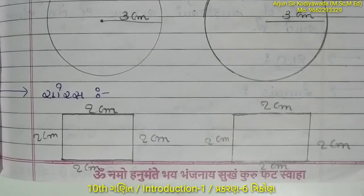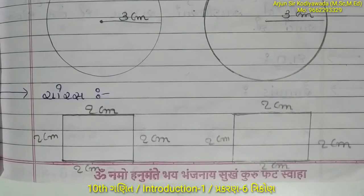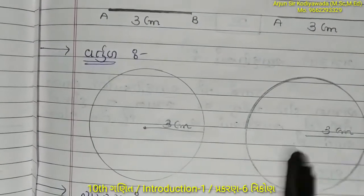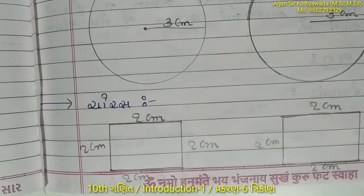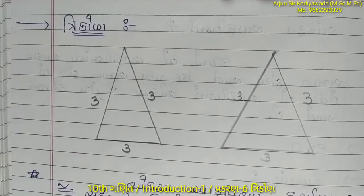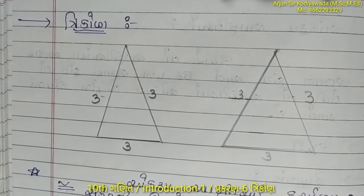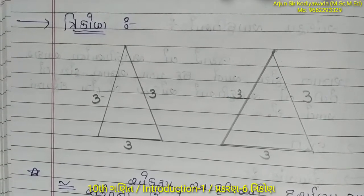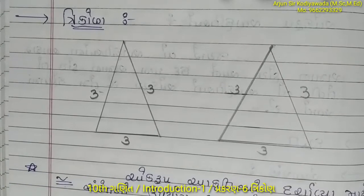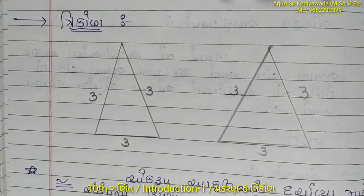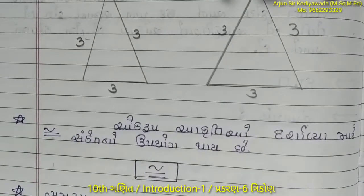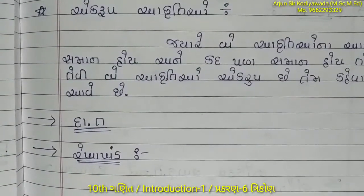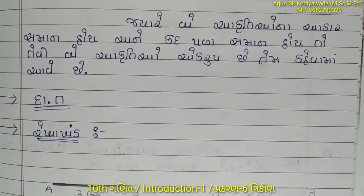એટલે વિદ્યાર્થી મિત્રો, એક રૂપ જે આકૃતિઓ છે એ કોને કેવાય? વ્યાખ્યા આપણે લખવાની. વર્તુળ ના પણ આપણે ઉદાહરણ લઈ શકીએ, ચોરસ ના પણ લઈ શકીએ, અને ત્રિકોણ નું પણ ઉદાહરણ લઈ શકો. જે ત્રિકોણ છે એ ત્રણ બાજુ - ત્રણ ત્રણ ત્રણ - ત્રણે બાજુ એક સરખી છે.